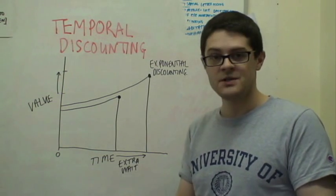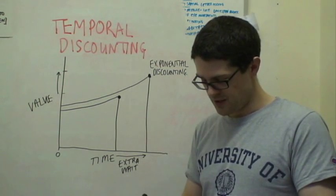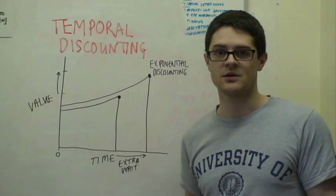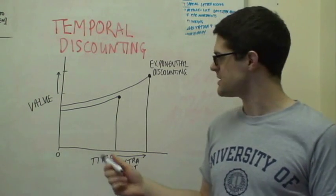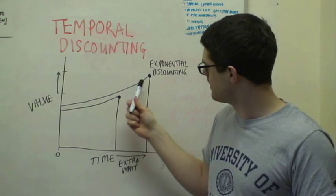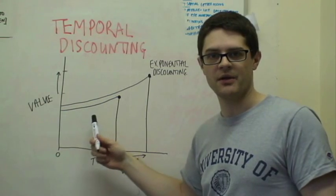But what we do need to know is some properties of this. And the most important one is called time consistency. And what that means is, you'll notice that these curves basically don't overlap or anything.